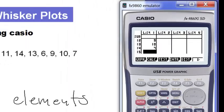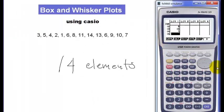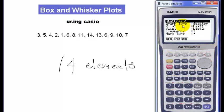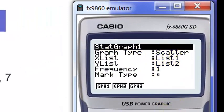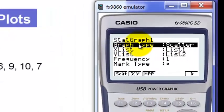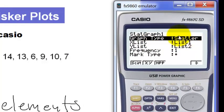Alright, next, we are going to change our graph type into box and whisker plot. So we have to press F1, F6. Note that, as of right now, our graph type is a scatter plot. So highlight this graph type, and then change this into a box and whisker plot.